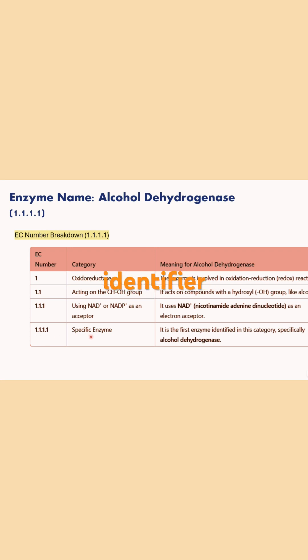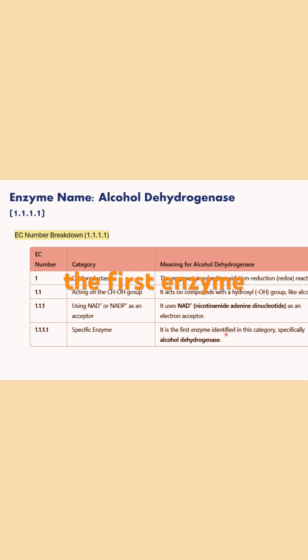The final fourth digit is the specific serial number that completes the unique identifier. It is '1' because alcohol dehydrogenase was the first enzyme identified in the category of oxidoreductases. This is how the EC number system works.